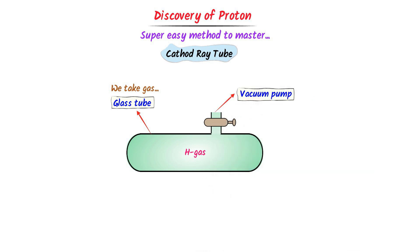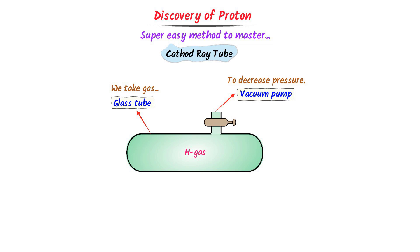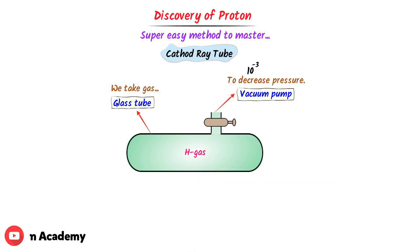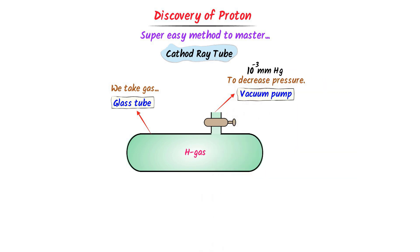The second part of the cathode ray tube is the vacuum pump. We use the vacuum pump to decrease the gas pressure inside the glass tube — for example, to 10 raised to the power minus 3 mm of Hg.